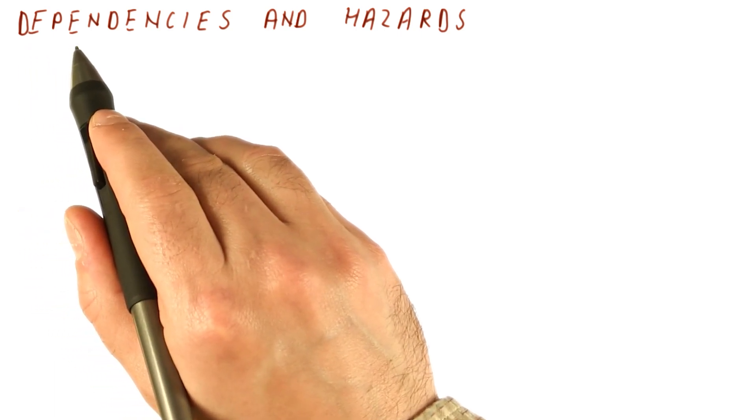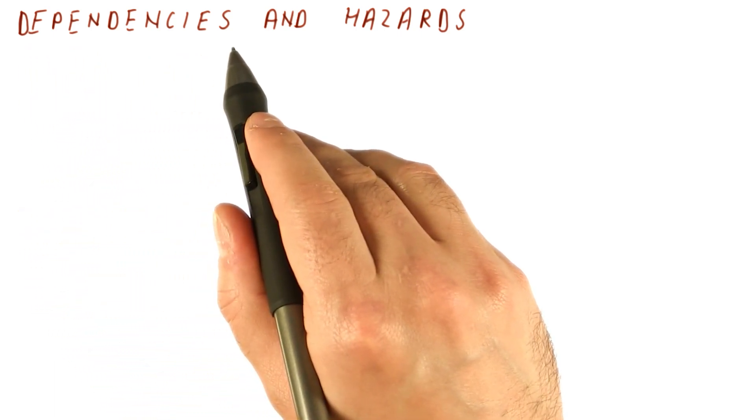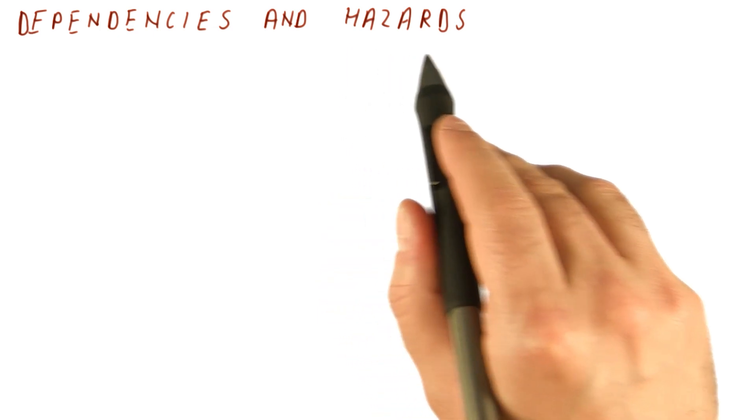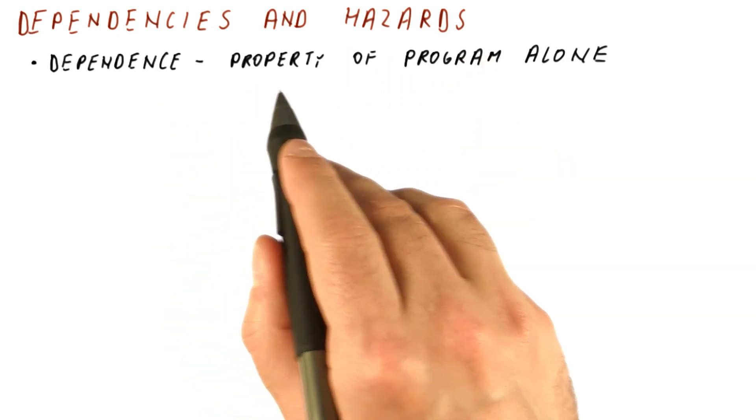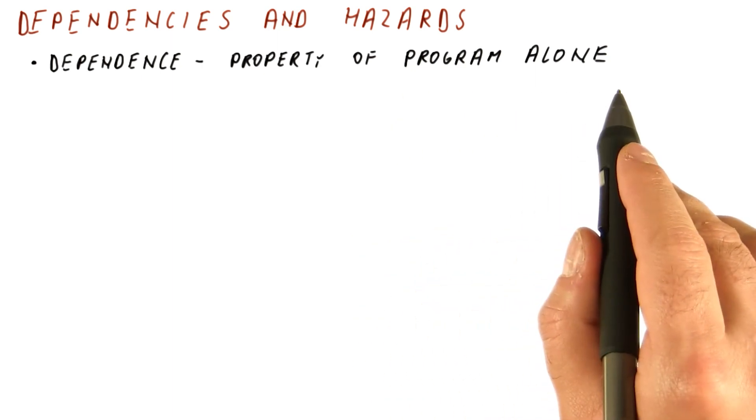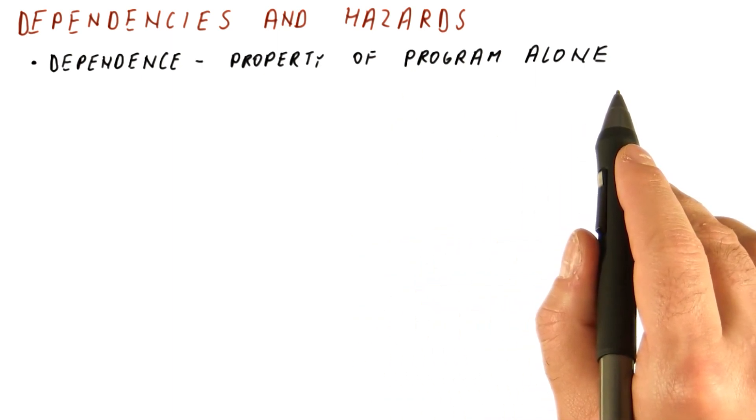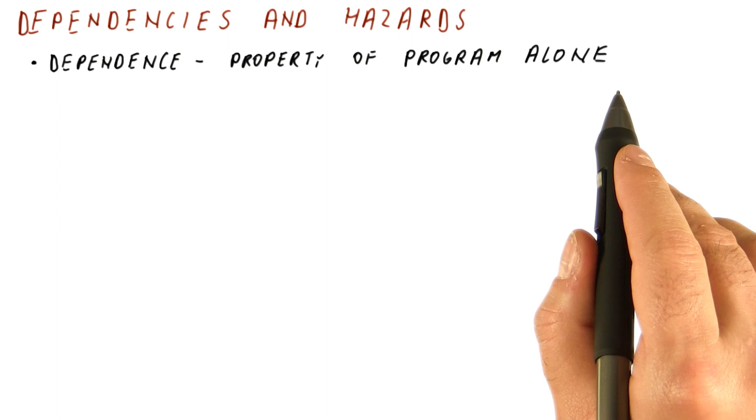Now let's discuss the relationship between the dependencies we have seen and what we call hazards in a pipeline. A dependence is the property of the program alone. We can just check whether two instructions have a dependence between them without any regard to what the pipeline looks like.